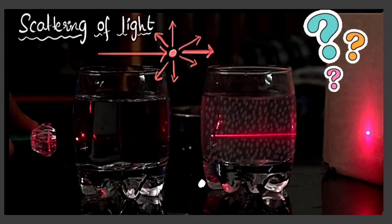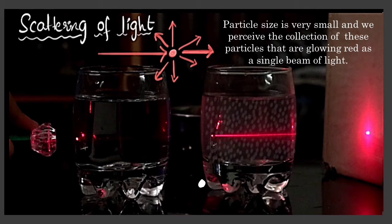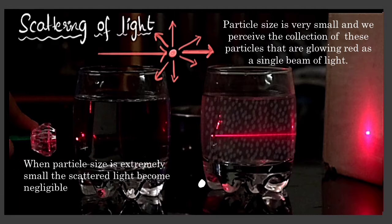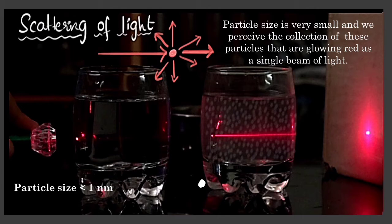Then why don't we see this path of light in sugar solution? The fact is that the particles in sugar solution also scatter light, but since they are extremely small in nature, the amount of light scattered by the particles of sugar solution is very less that it can be neglected.